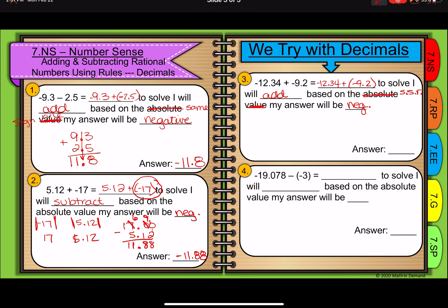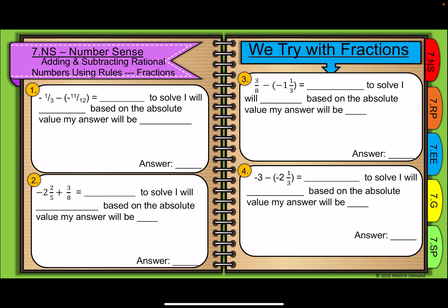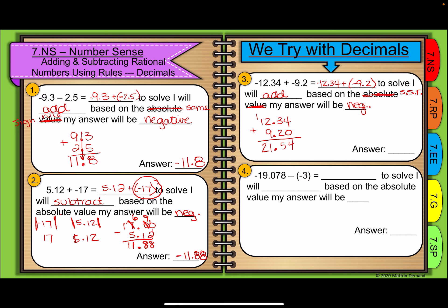It's already started off as addition, so I didn't have to change it. I have 12 and 34 hundredths plus 9 and 2 tenths. Line up my decimals and add the 0 as a placeholder. 4 plus 0 is 4, 3 plus 2 is 5. Bring down my decimal. 9 and 2 is 11, carry the 1, it's 2. Again, my answer will be negative, so it's negative 21 and 54 hundredths.